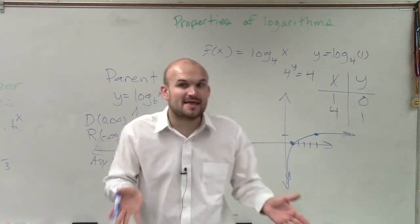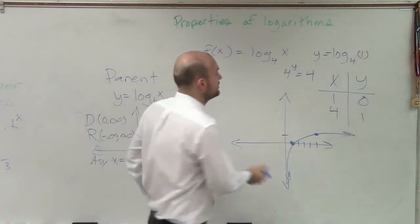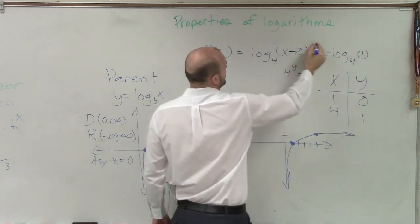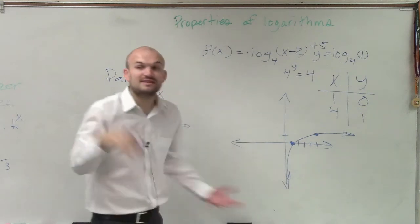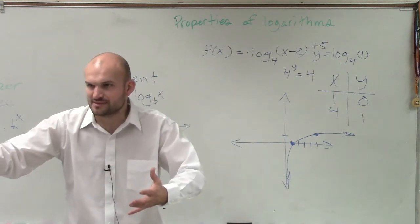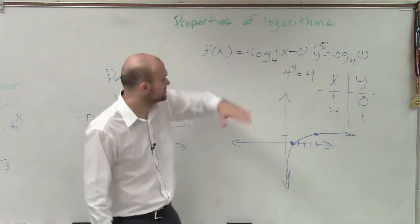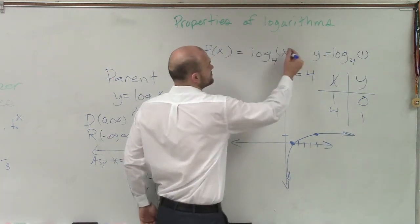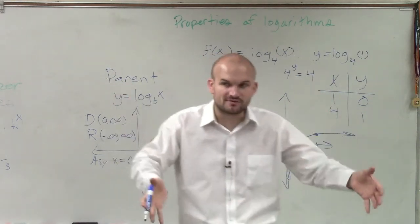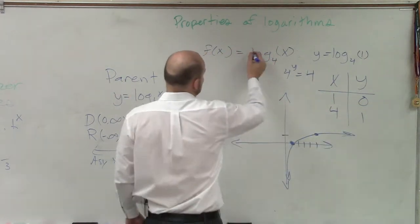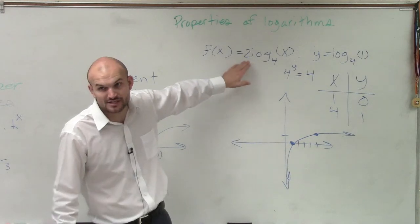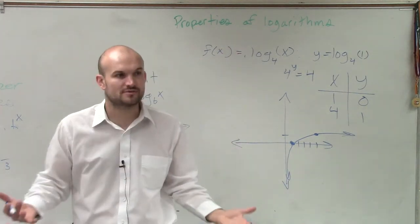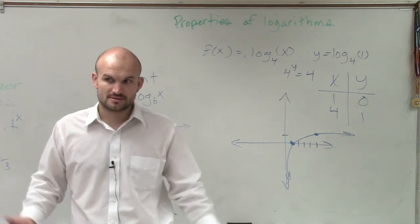So you guys could do that. And then if there were transformations, let's say it was like now the function was minus 2 or plus 5 or negative, whatever, then you can apply the transformations. Do you see what I'm saying? But there are no transformations for this. So we just leave it like that. But that's what I'm trying to tell you guys. You guys can graph the parent function, then apply the transformations. Make sense?